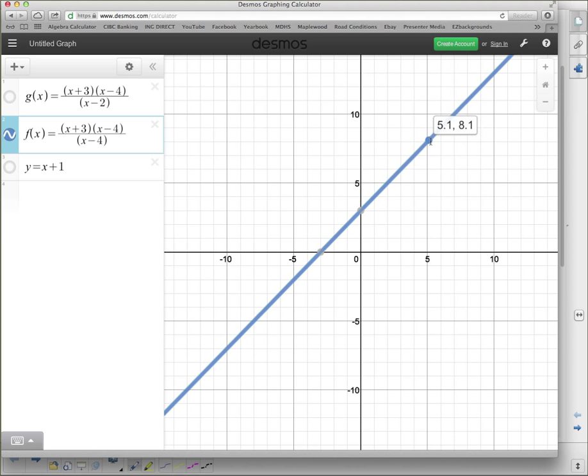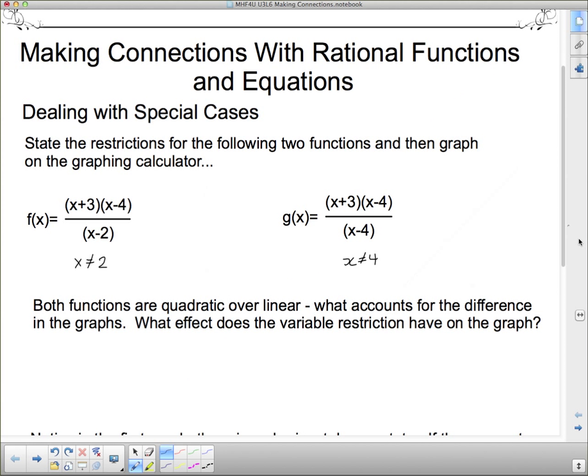But we also talked about if we go back here with state the restrictions, we said x cannot equal 4. Well, for a line, x can be anything. There's no restriction on the domain. Or is there? Let's have a look. If I go along here, what happens as I approach x equals 4? At x equals 4 the function is undefined. There's a hole in that function. Dear Liza, dear Liza. It's undefined at x equals 4. We cannot define it. So we call it a hole.